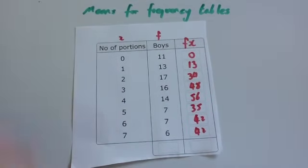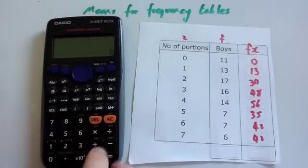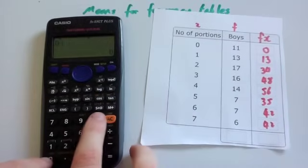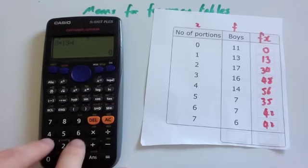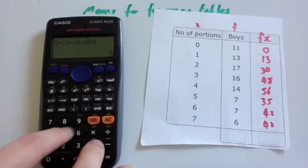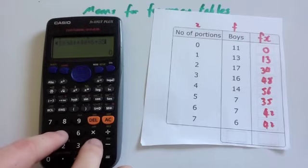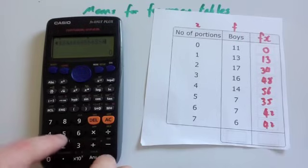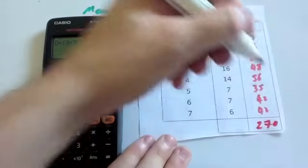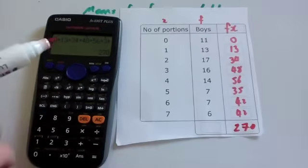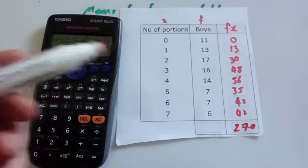Get your calculator if you want to. So we're going to add together 0 plus 13 plus 34 plus 48 plus 56 plus 35 plus 42 plus 42, and we get 270. So that's the grand total. In other words, on one day, there's 270 portions of fruit and veg eaten.